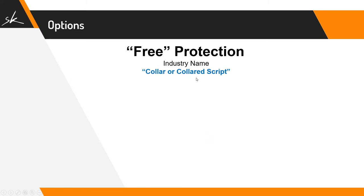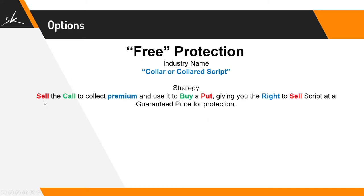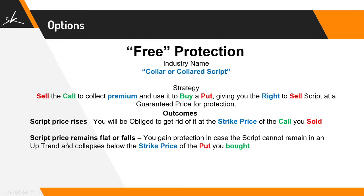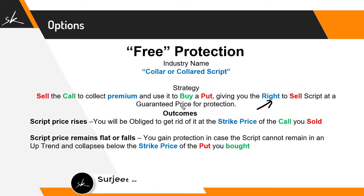This is basically called a collar, or collar strategy — that is the industry name. What is done is you sell the call to collect the premium, selling an out-of-the-money call at your target. By selling that call, you collect some premium, and then you use that premium to buy a put, which gives you the right to sell at a guaranteed price for protection. If the script price rises, you will be obliged to get rid of it at the strike price of the call you sold — it goes to your target, you close your position. In case it remains flat or falls, you gain protection if the script collapses below the strike price of the put you bought — you have a guaranteed exit at your stop loss level.